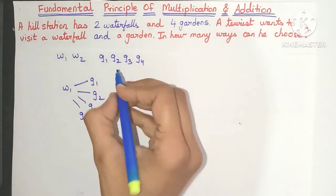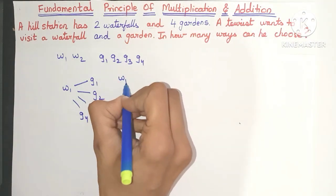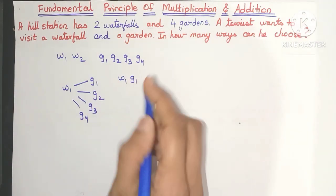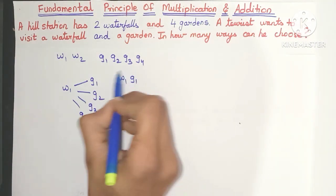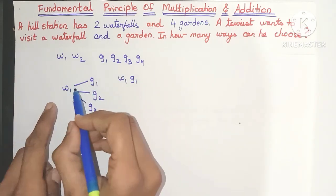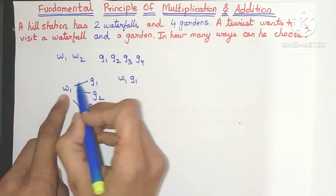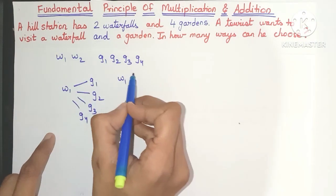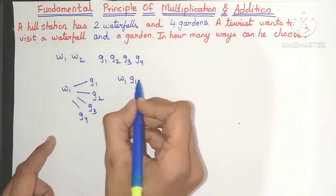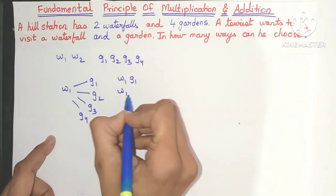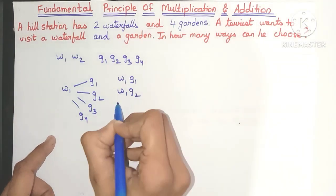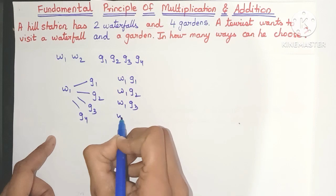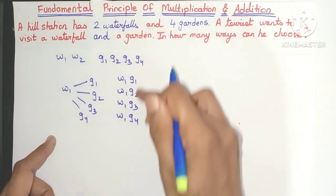So how many combinations have we got? W1-G1 is one combination. Now why are these together? Because he has to visit both the waterfall and the garden — that's why we have combined them. So we have W1-G1, W1-G2, W1-G3, and W1-G4.